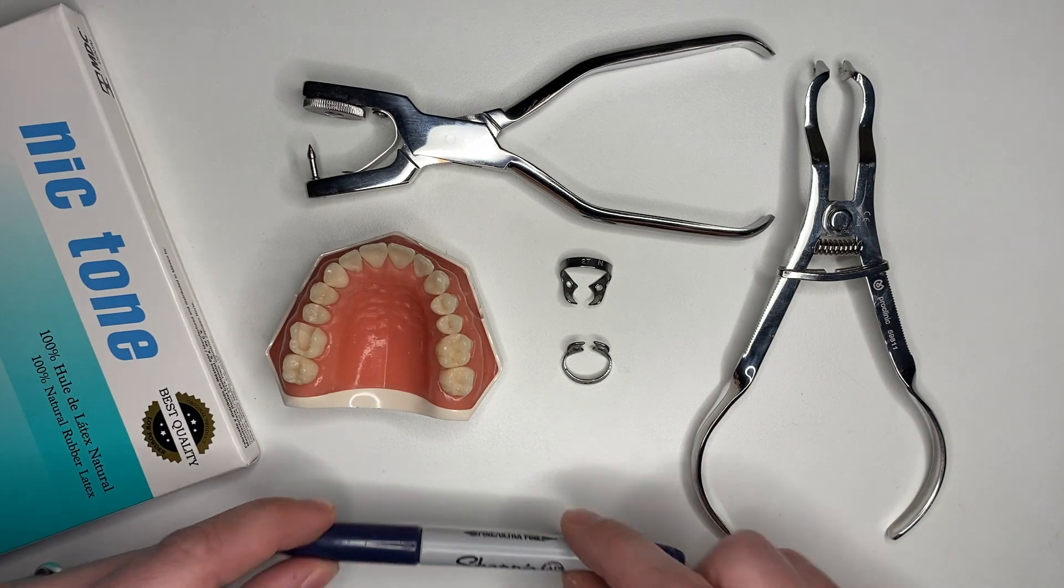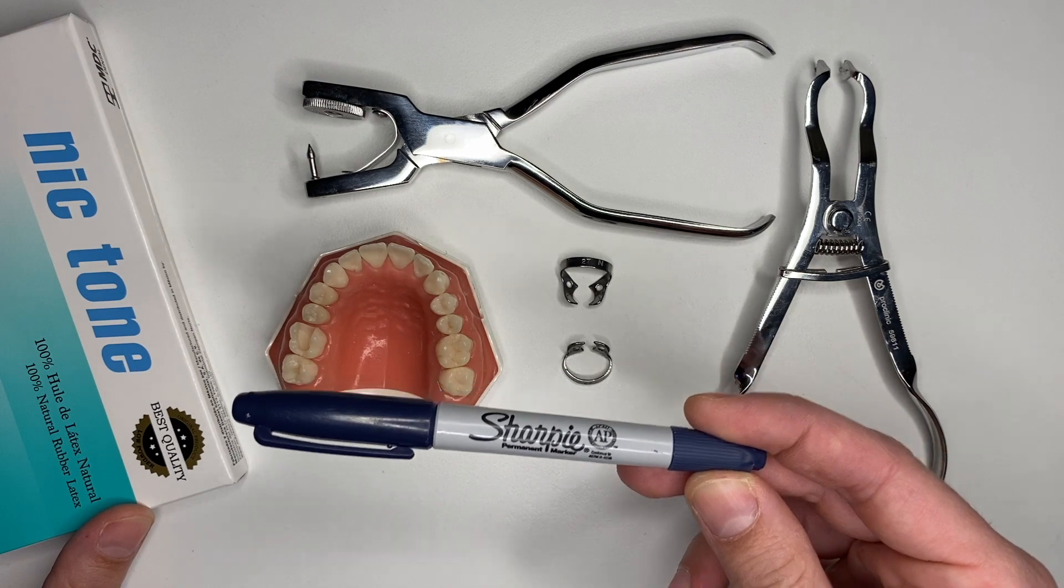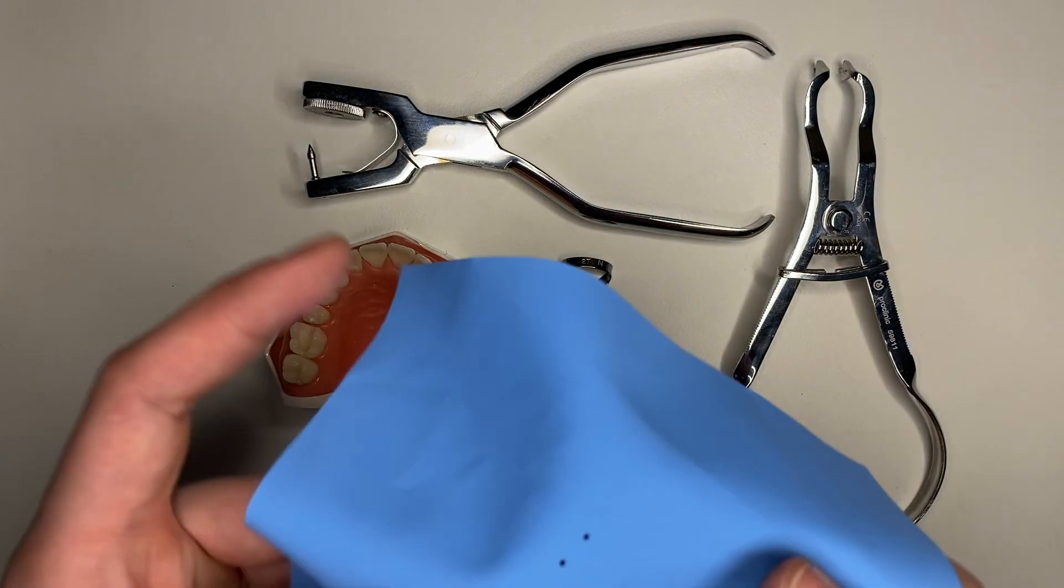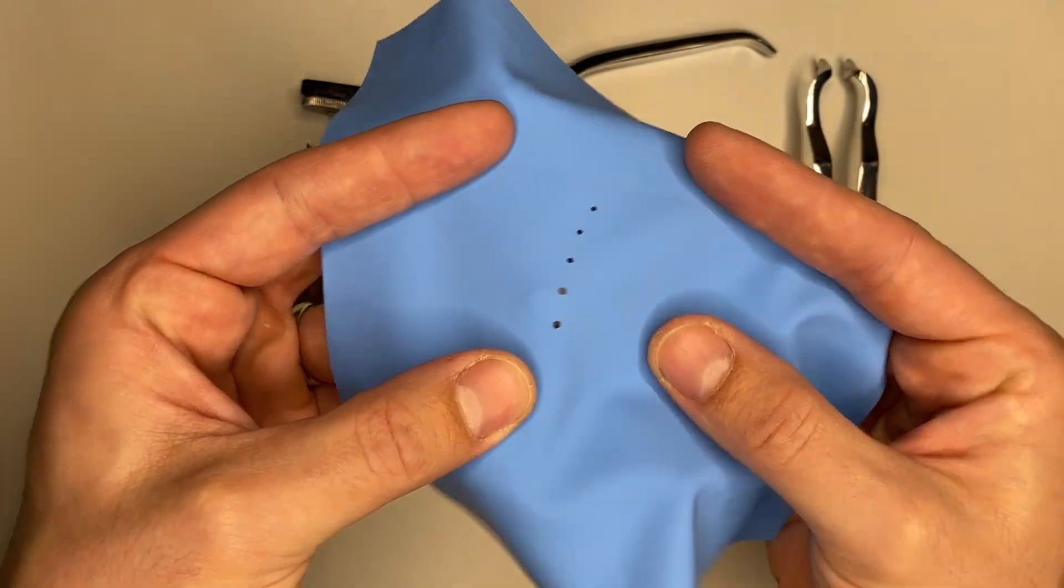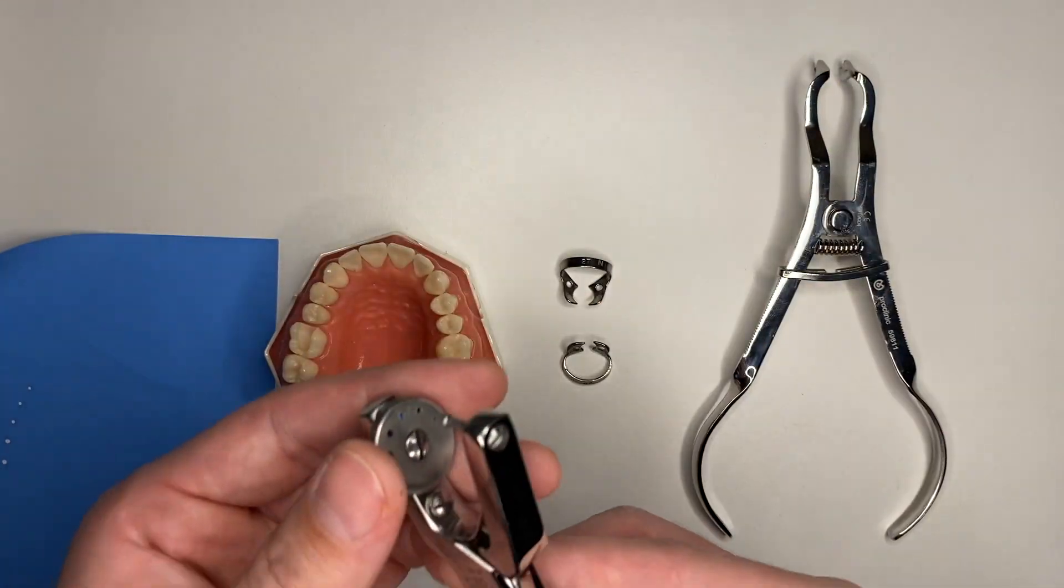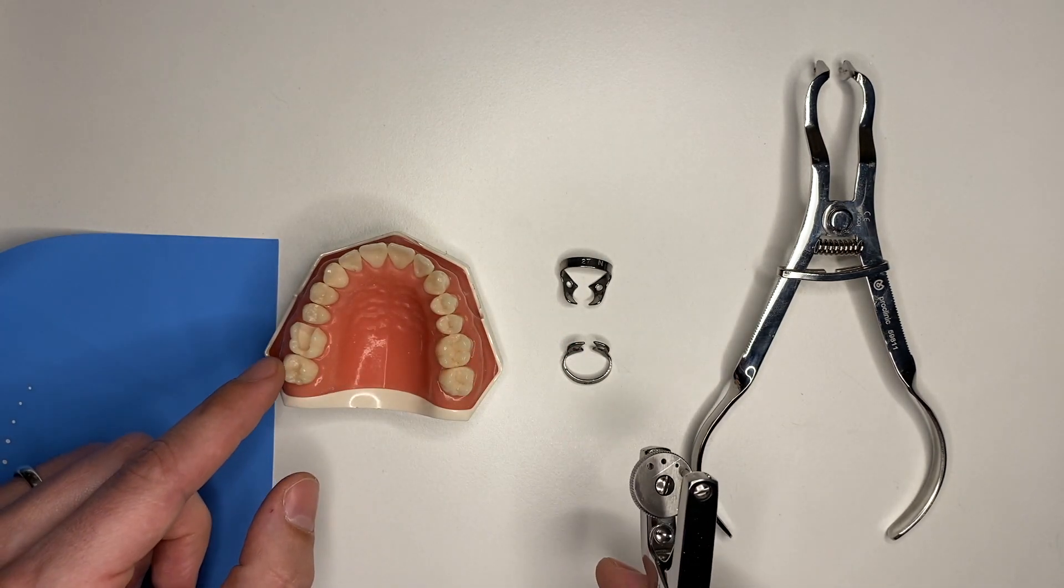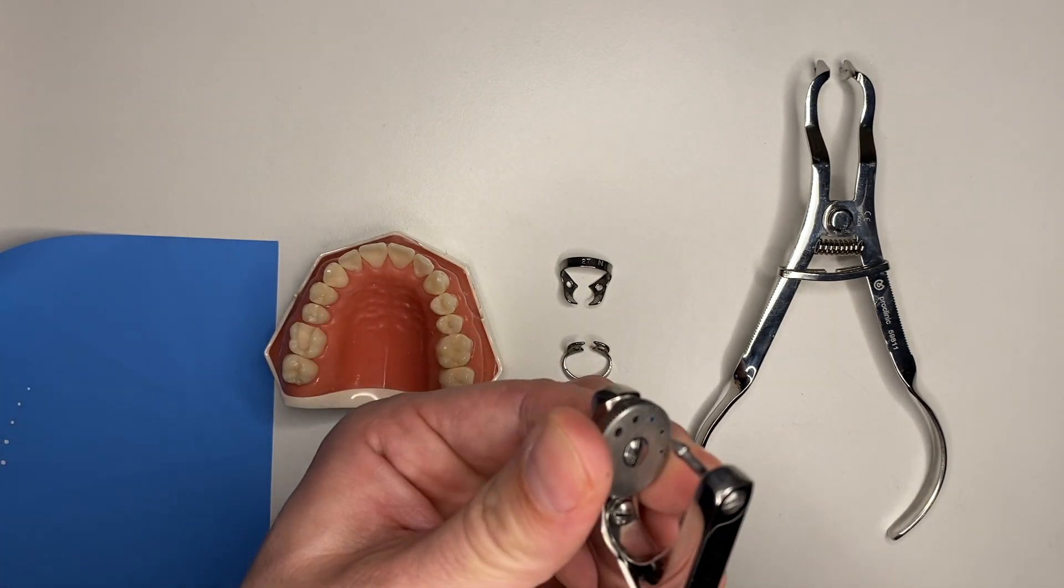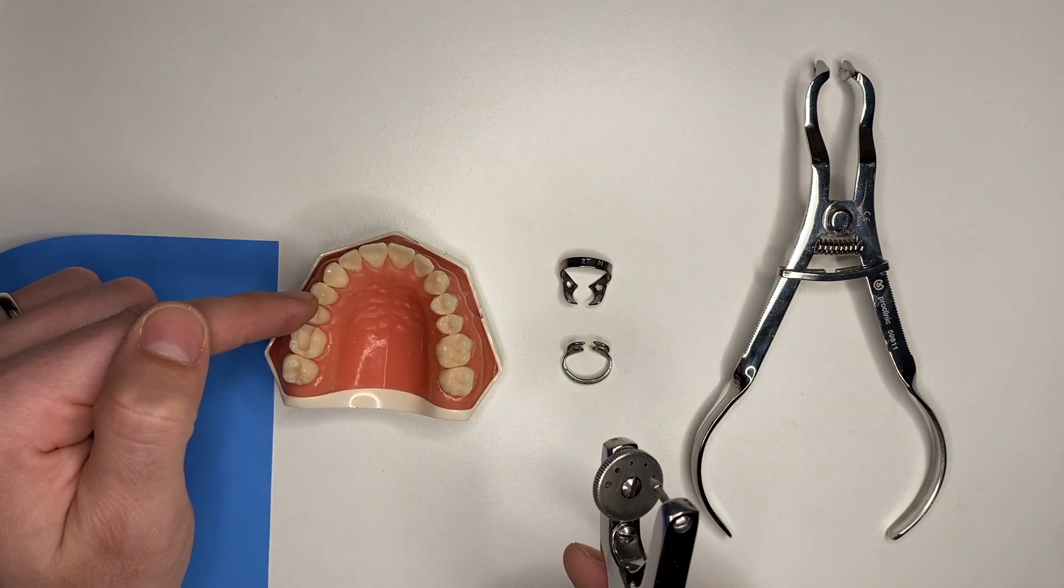That being said, of course it's going to be a Nic Tone rubber dam. I have one that's already been marked and perforated. I perforated it by using the second largest punch hole, this one, for the second molar, the same hole for the first molar, and then I went to the third hole in order to obtain holes for the two premolars and my canine.